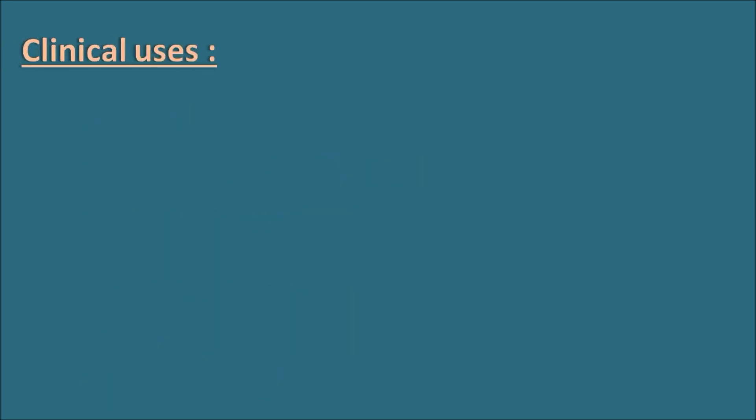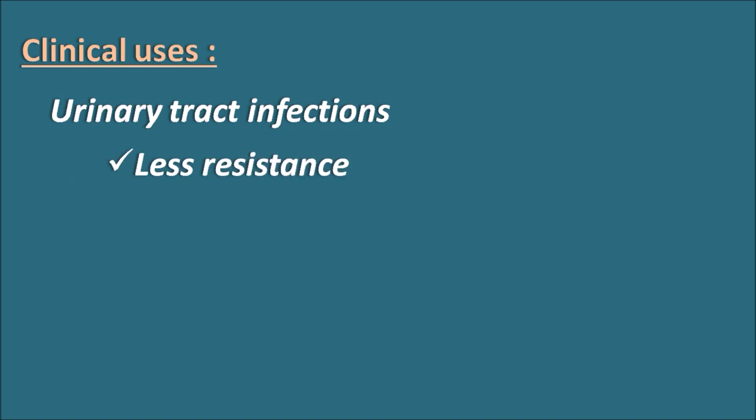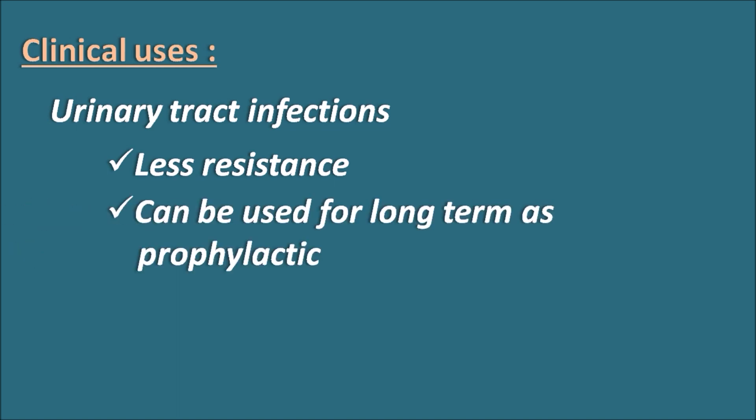What are the clinical uses? Methenamine is only confined to treat urinary tract infections. It is not suitable for any other type of bacterial infections. It has some advantage over other antibiotics because antibiotics can develop resistance, but Methenamine, as it is converted into formaldehyde, has less resistance towards its therapeutic action. Another advantage is that it can be used for long term as prophylactic, so it can prevent urinary tract infections and can be given for longer periods.